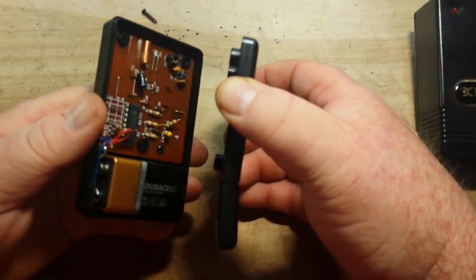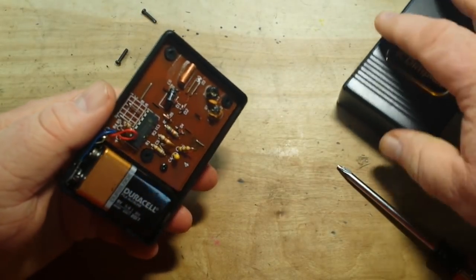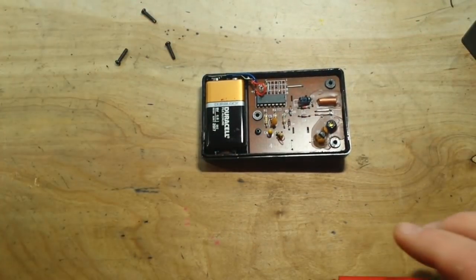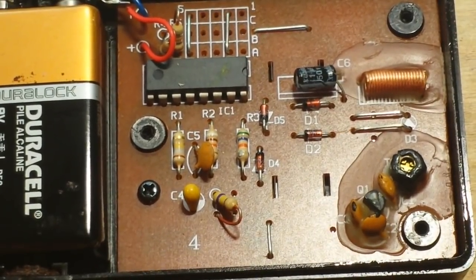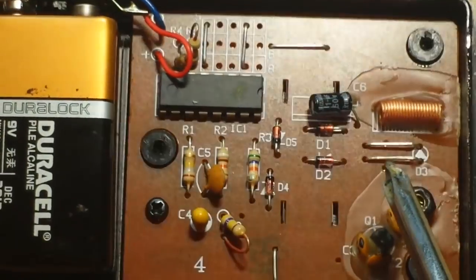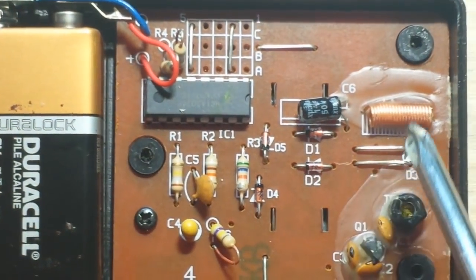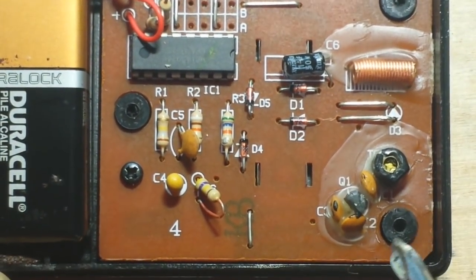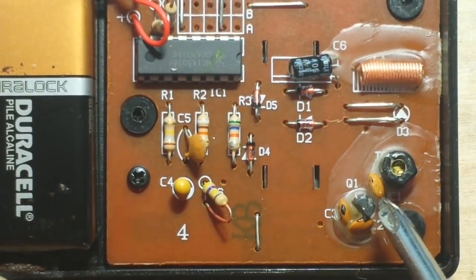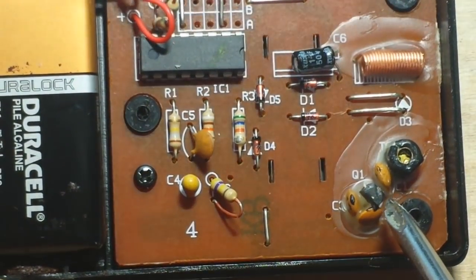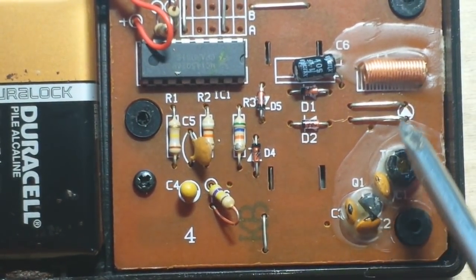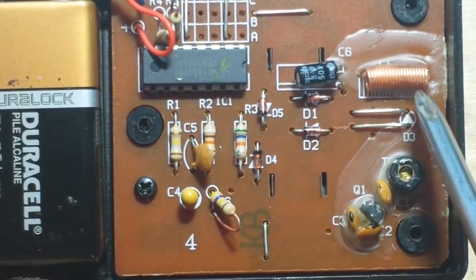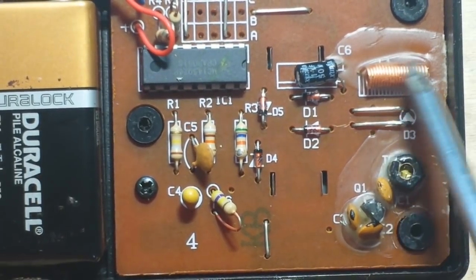Okay, so that came apart easy enough. Let's have a look at what's inside. Here's our RF section. We've got a simple transistor inductor oscillator going on here, some capacitors, a couple diodes, and there's our antenna. This is all encased in wax, probably paraffin wax.